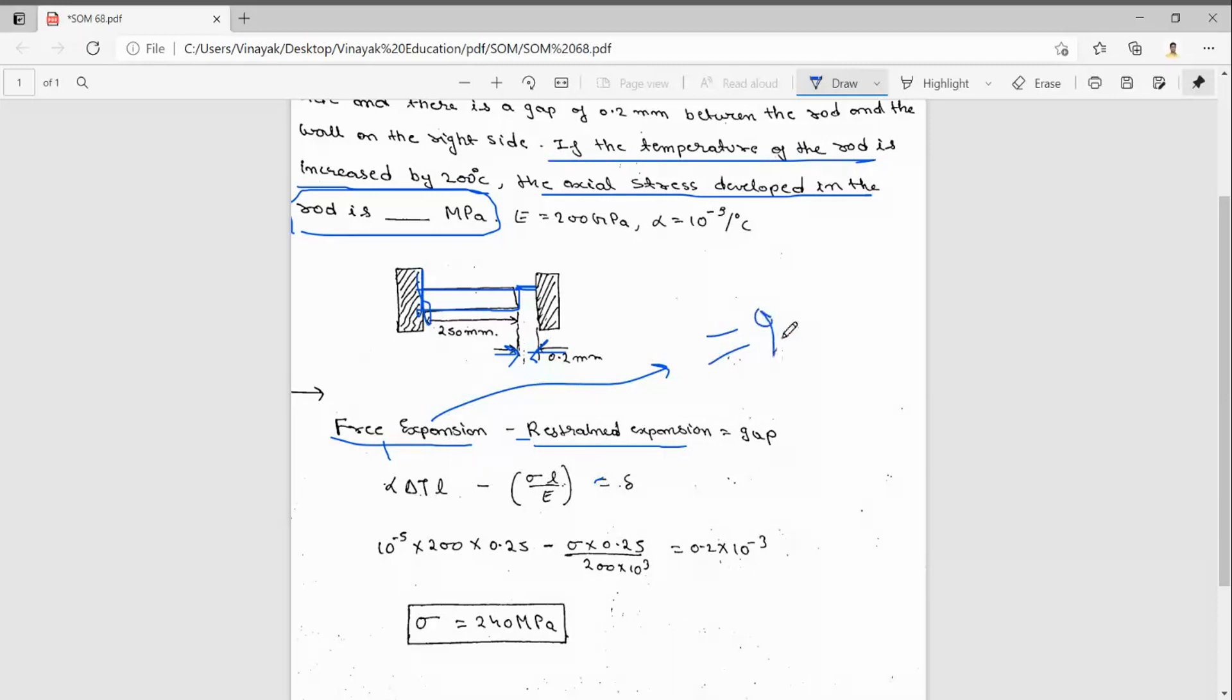So that deformation, if we minus from this, we will get this gap. So alpha delta T times L equals sigma L by E plus gap.